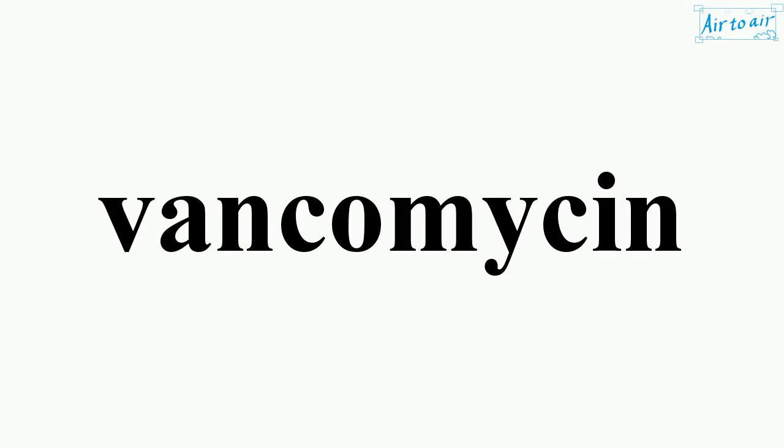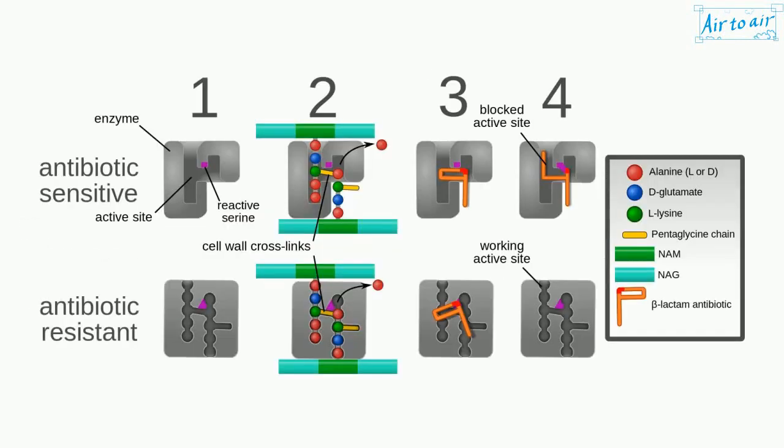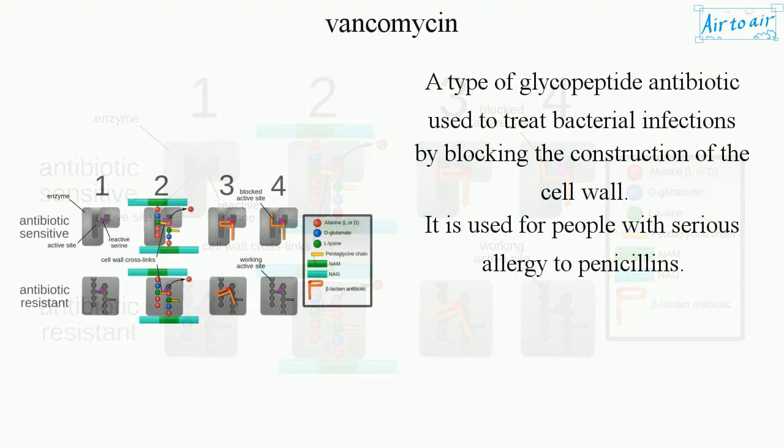Vancomycin is a type of glycopeptide antibiotic used to treat bacterial infections by blocking the construction of the cell wall. It is used for people with serious allergy to penicillins.